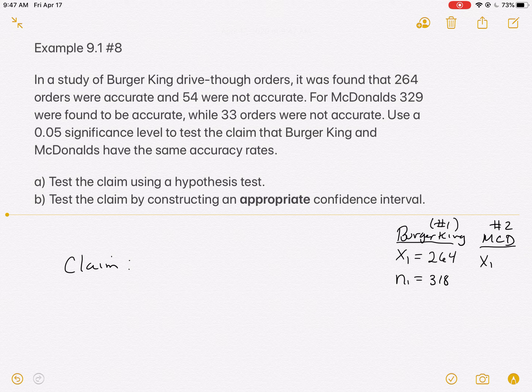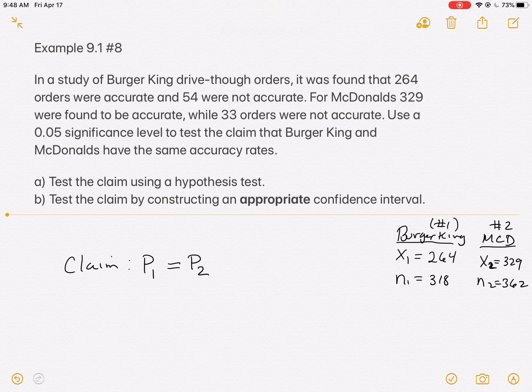There's also McDonald's, which we'll call number two. McDonald's had 329 accurate orders out of a total of 329 plus 33, which is 362. I put a subscript 2 because they're my second population. Notice there's no overlap between Burger King and McDonald's - they're two completely independent organizations and we're comparing their rates. What we're claiming is that they have the same accuracy rate, so our claim is that the percentage of accurate orders from Burger King is the same as the percentage of accurate orders from McDonald's.